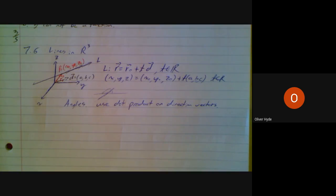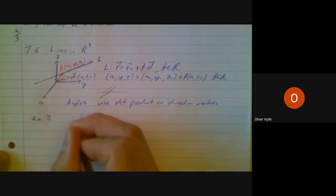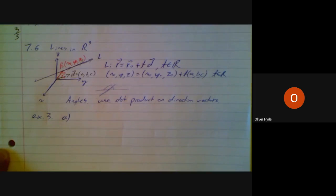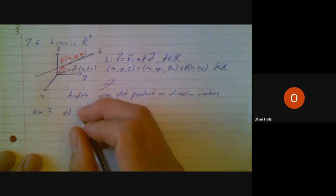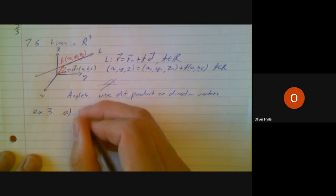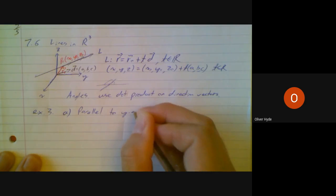Last thing I want to do is maybe just provide some illustrations for the questions on example number three, just to help you get the direction vectors. I think the position vectors should have been straightforward. Example 3a, you were asked to find the equation of a line parallel to the y-axis.